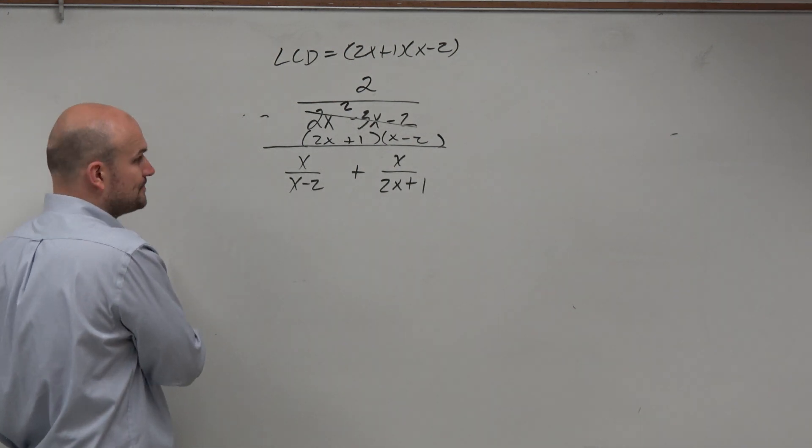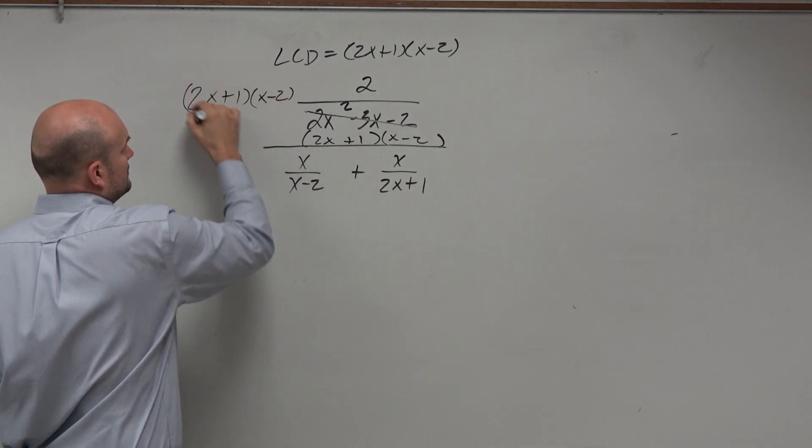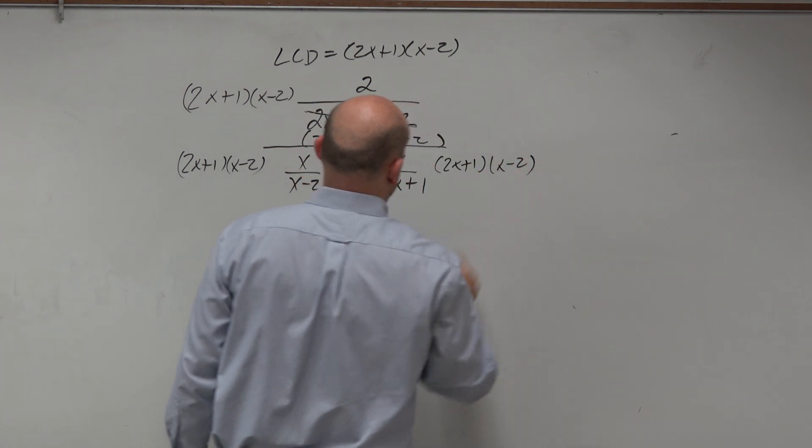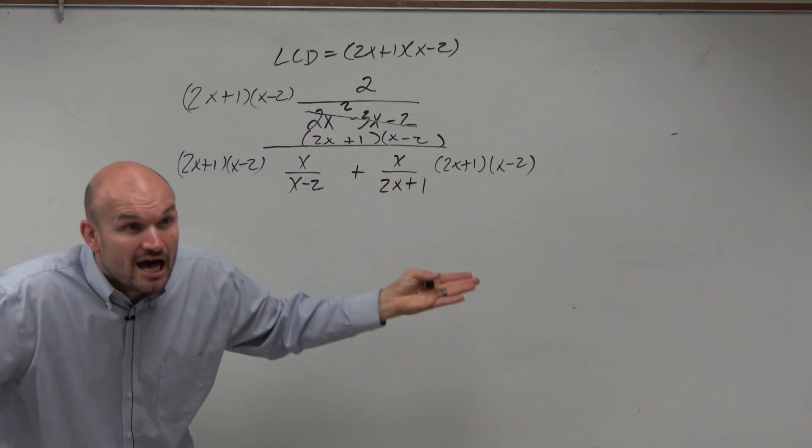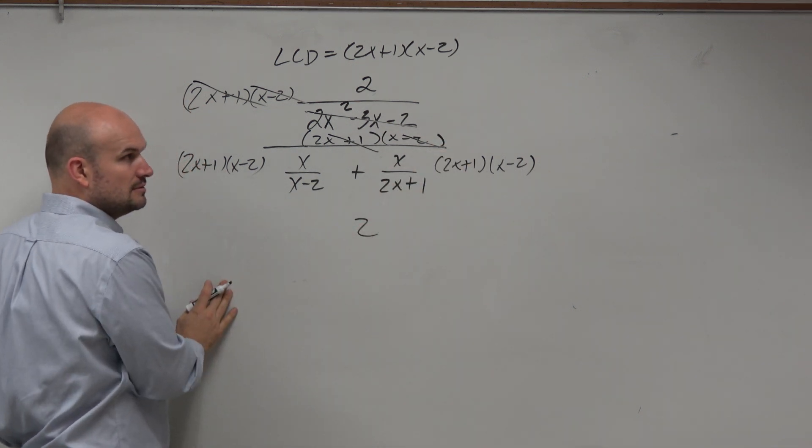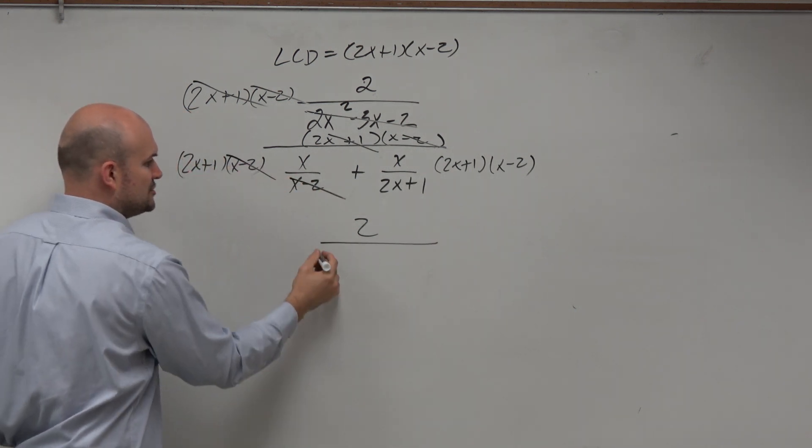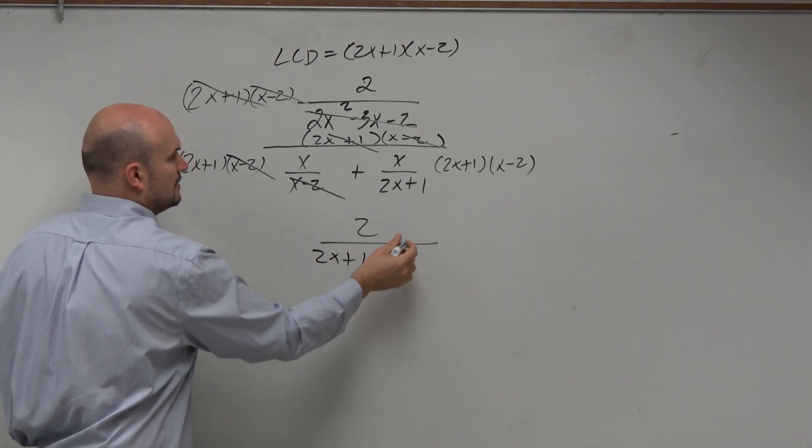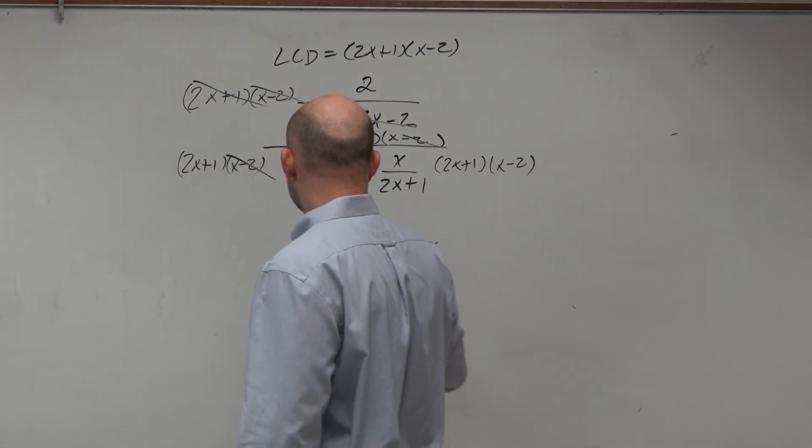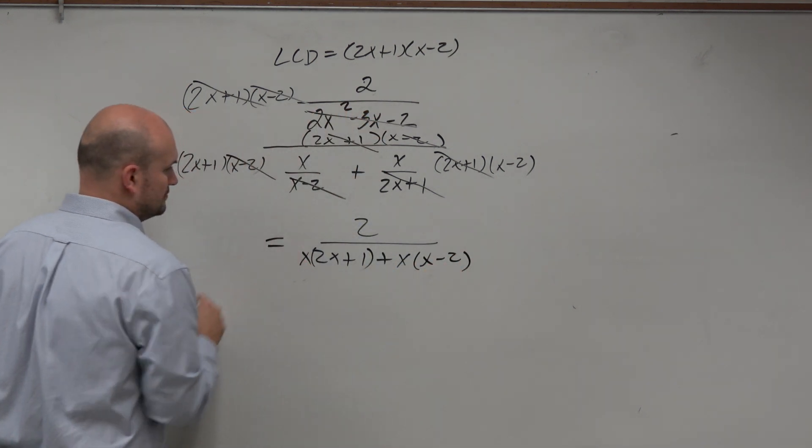All right, let me finish up. Now, let's multiply everything by the LCD. Everything. Does this divide into that? Of course, it's itself. Of course it divides into itself. 2, because 2 is left over. Does x minus 2 divide into that? Of course, it divides into that 2x plus 1 times. Yeah, there is that x right there on top. Times x. And then over here, the 2x plus 1 divides in. We're left with an x times x minus 2.